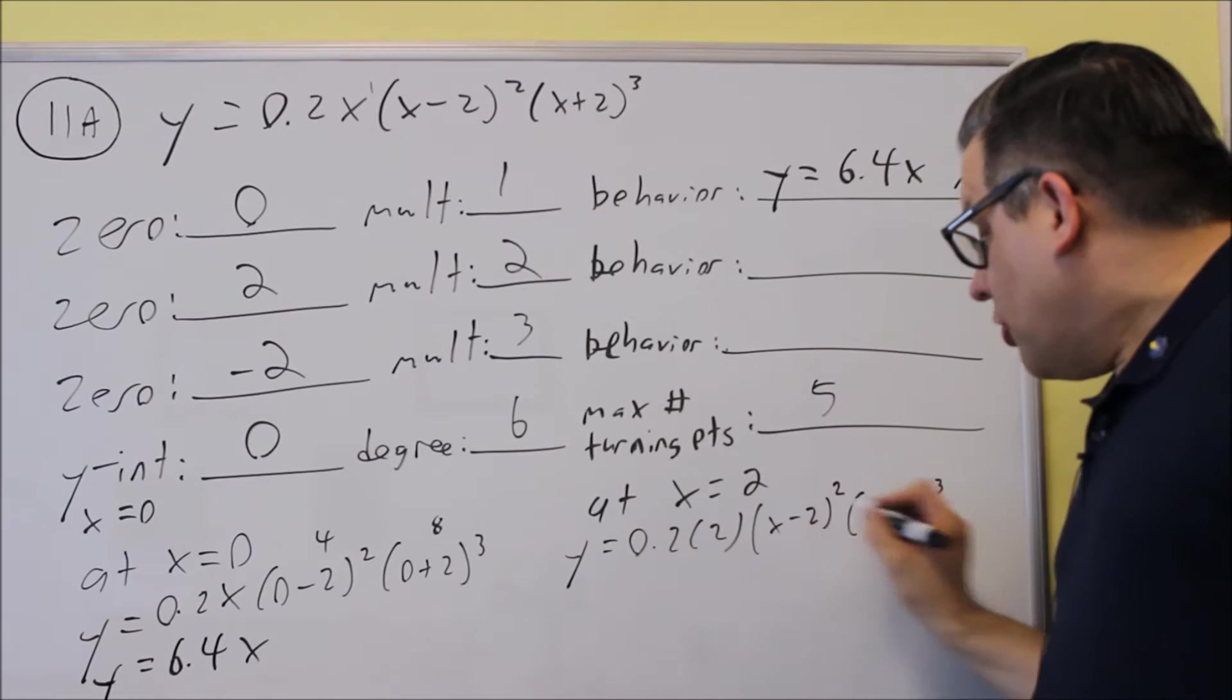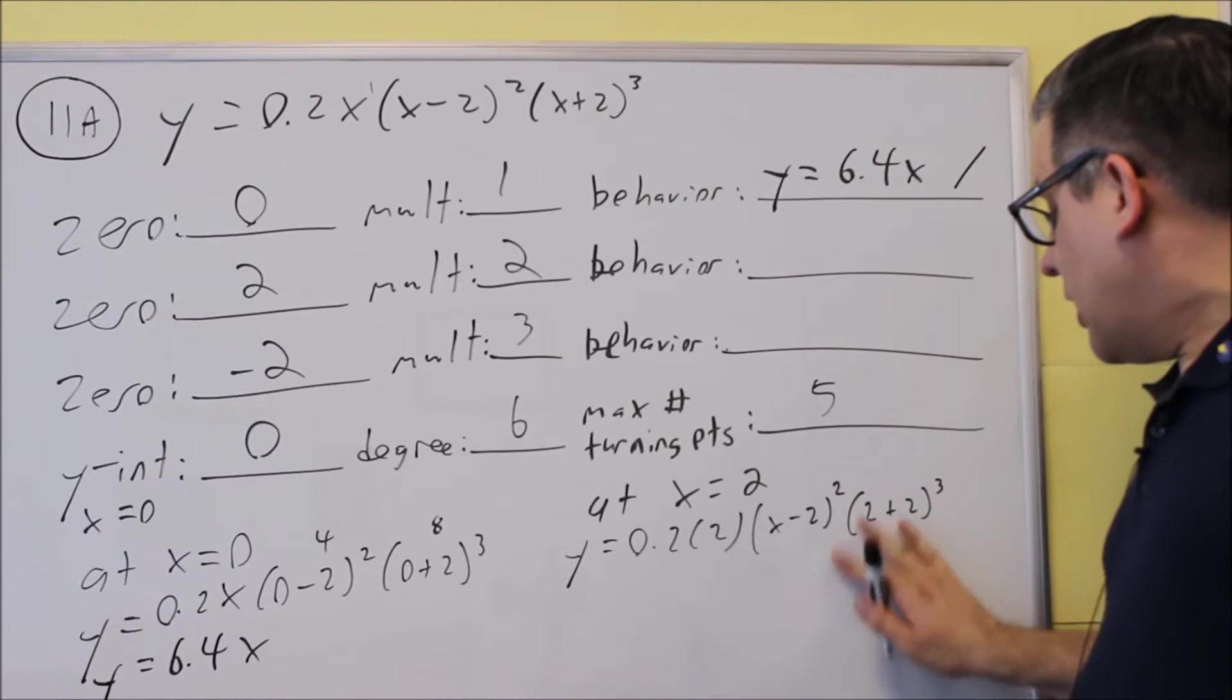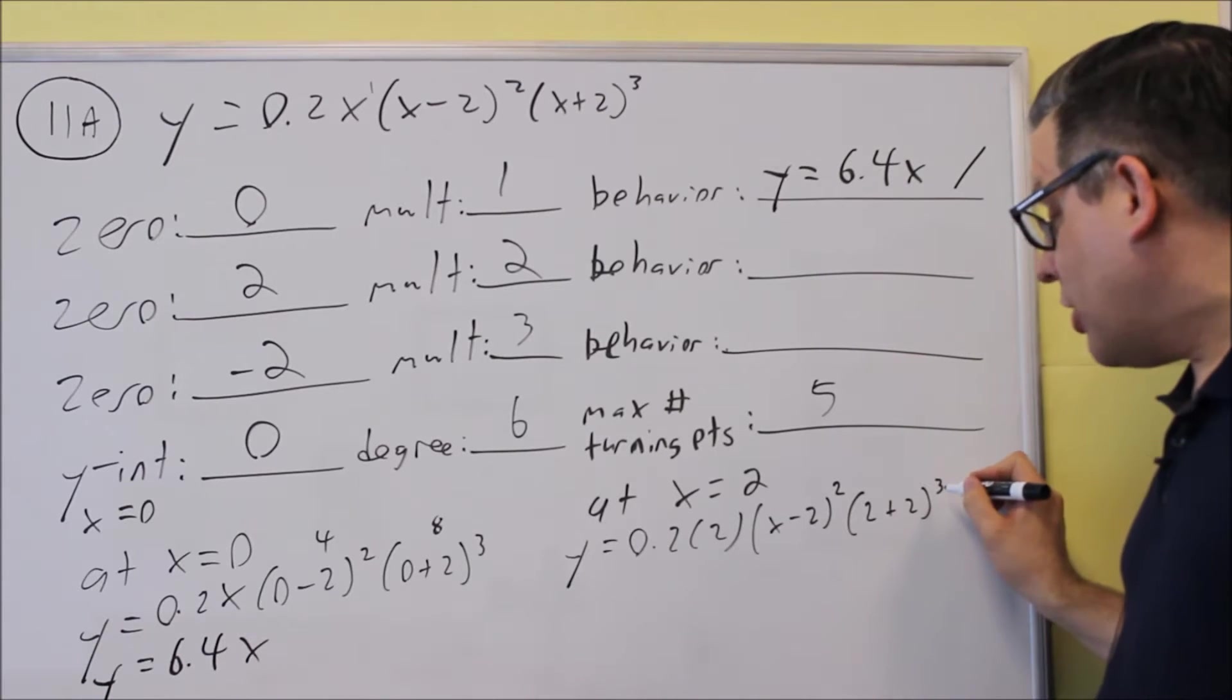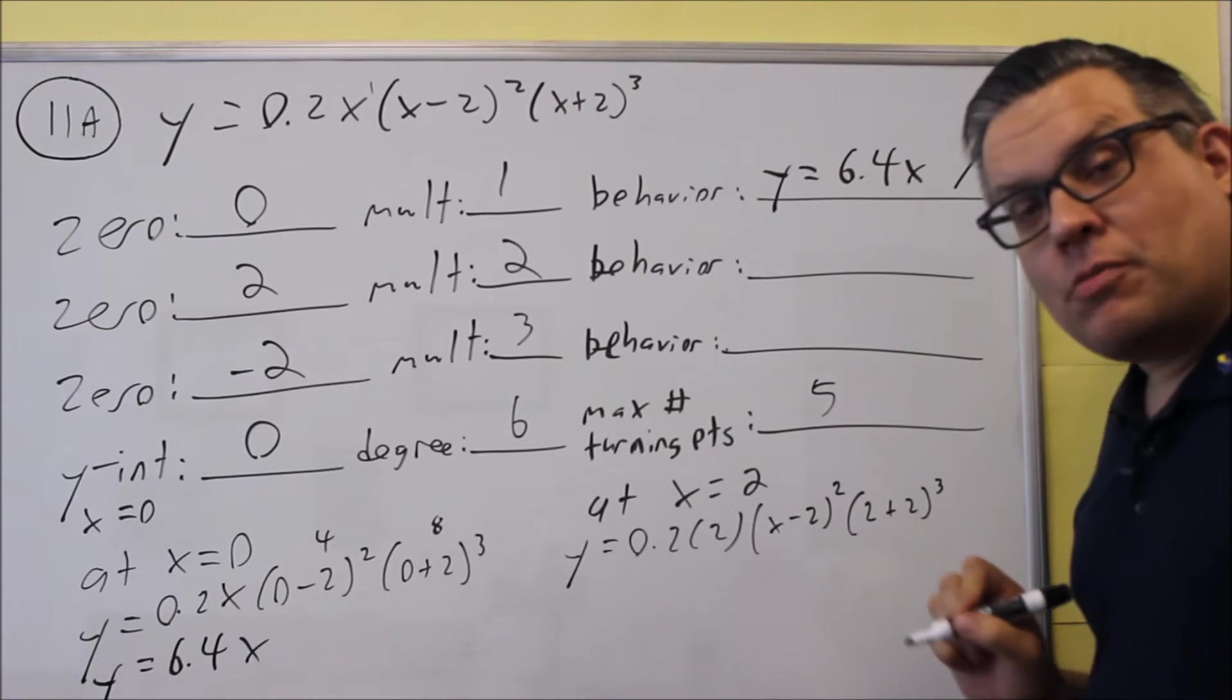And like before, you want to simplify this. This part, 2 plus 2, that's going to give us 4 cubed. And then you're going to multiply that by the other two pieces that are there.